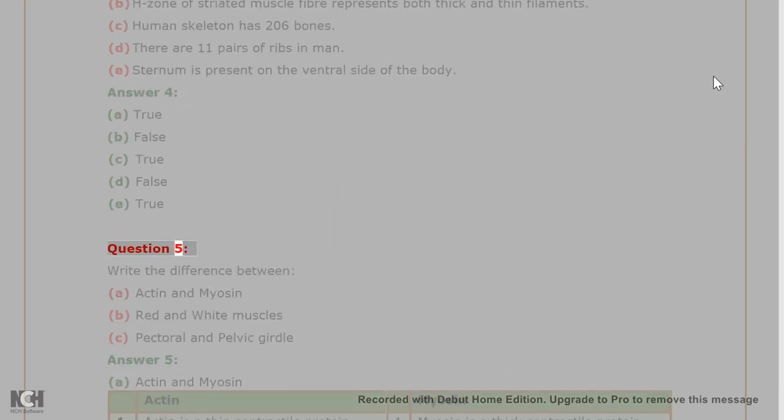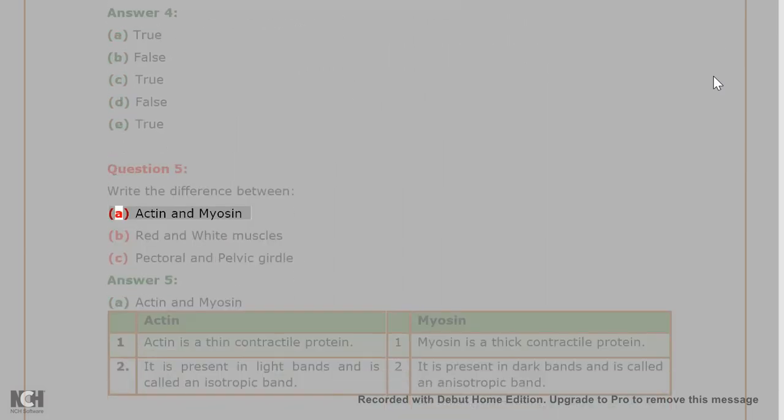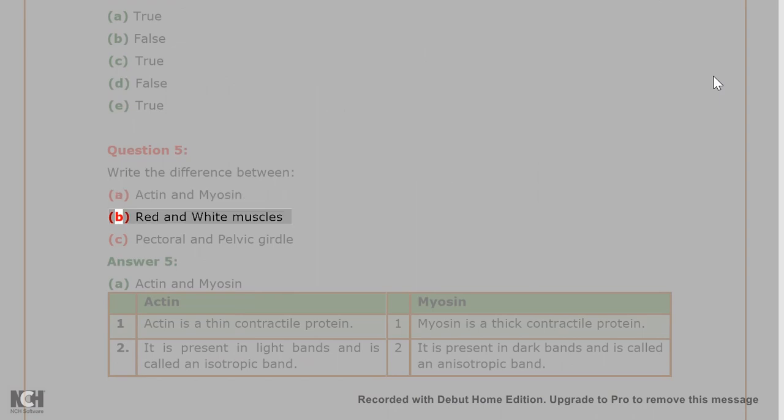Question 5. Write the difference between A. Actin and Myosin. B. Red and White muscles. C. Pectoral and Pelvic girdle.